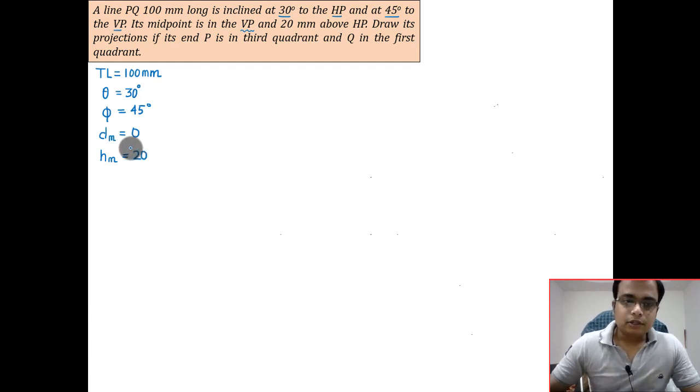Now there's something extremely important: draw its projection if the end P is in third quadrant. This is very important - end P is lying in the third quadrant. If it lies in the third quadrant, then d is above and h below.